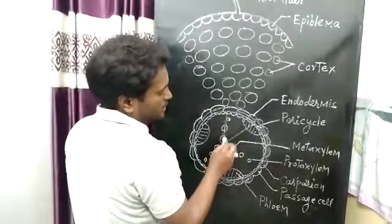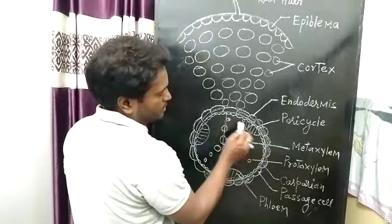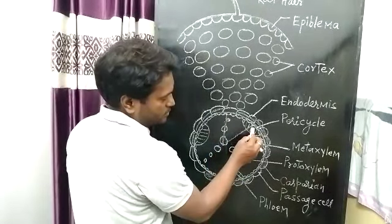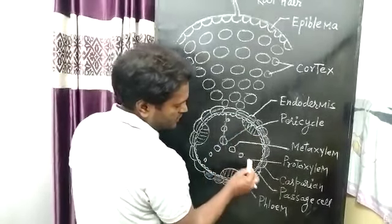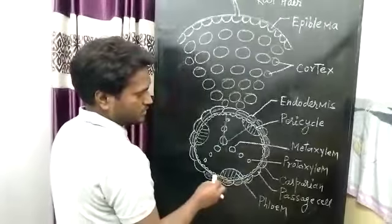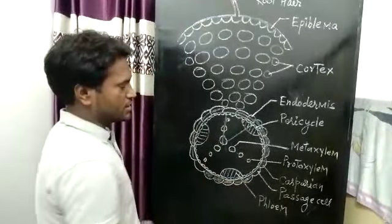In between the Xylem bundles, there is Phloem. This one is Xylem, this one is Phloem, this one is Phloem, this one is Xylem, this one is Phloem. This is the radial condition.